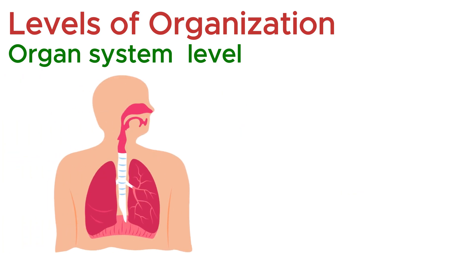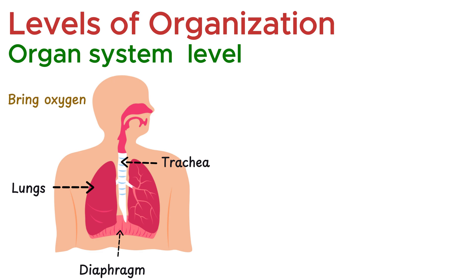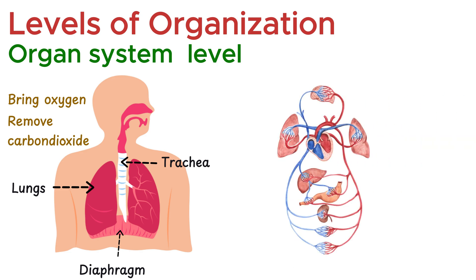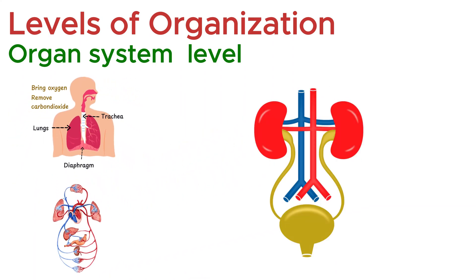The respiratory system is made up of the lungs, trachea, and diaphragm. Together, they bring oxygen into the body and remove carbon dioxide, a process vital for survival. The circulatory system, powered by the heart, transports blood, oxygen, and nutrients throughout the body, while the excretory system, including the kidneys and bladder, filters waste products and maintains balance in body fluids.